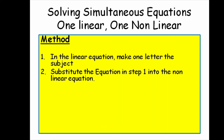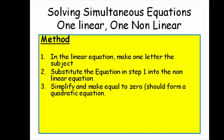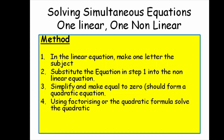In step two, substitute this rearranged formula into your non-linear equation. By doing that, rather than having two variables you now just have one. In step three, simplify — collect all like terms together and make it equal to zero. At this point you should spot that this now looks like a quadratic equation, and you then solve it by factorisation or using the quadratic formula.